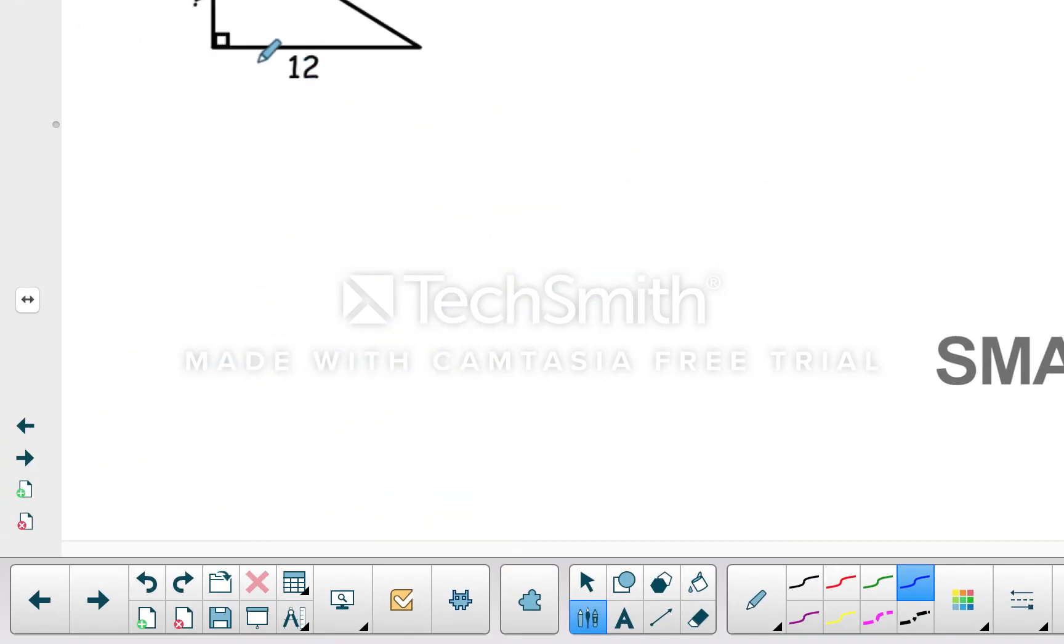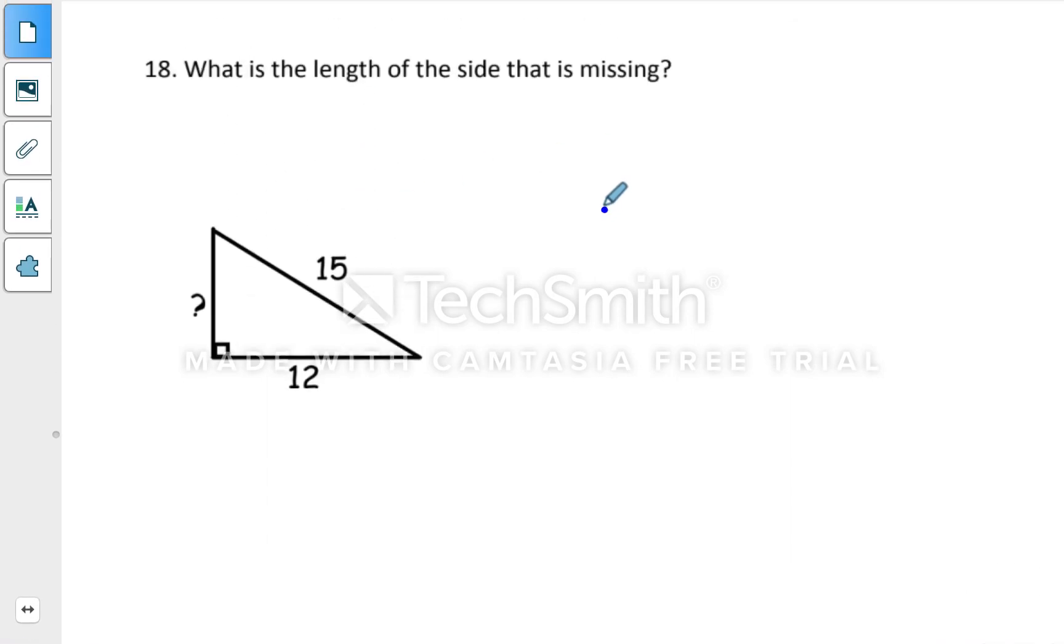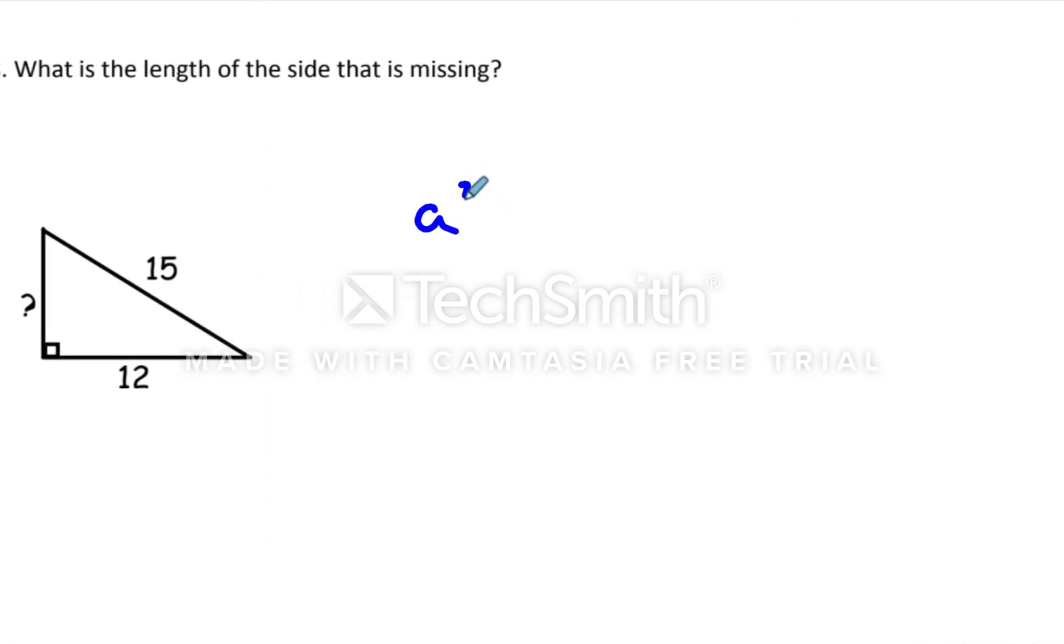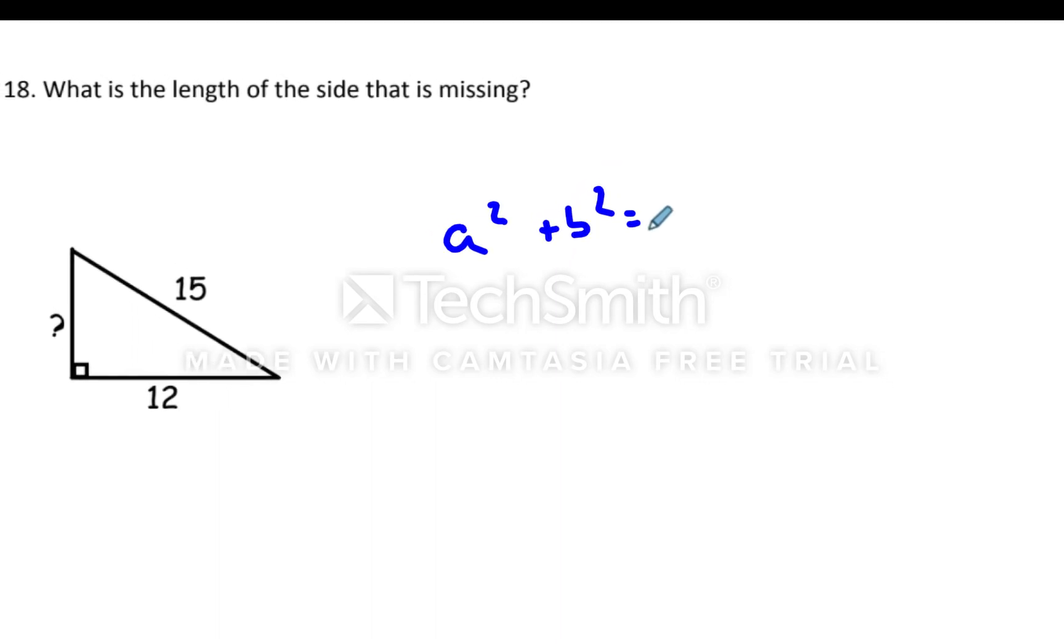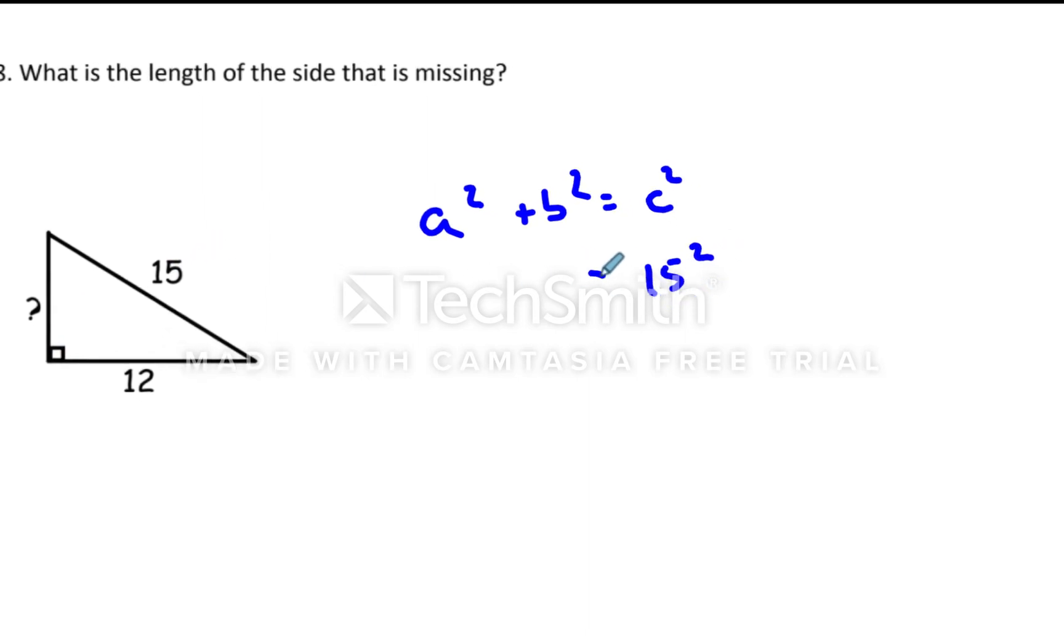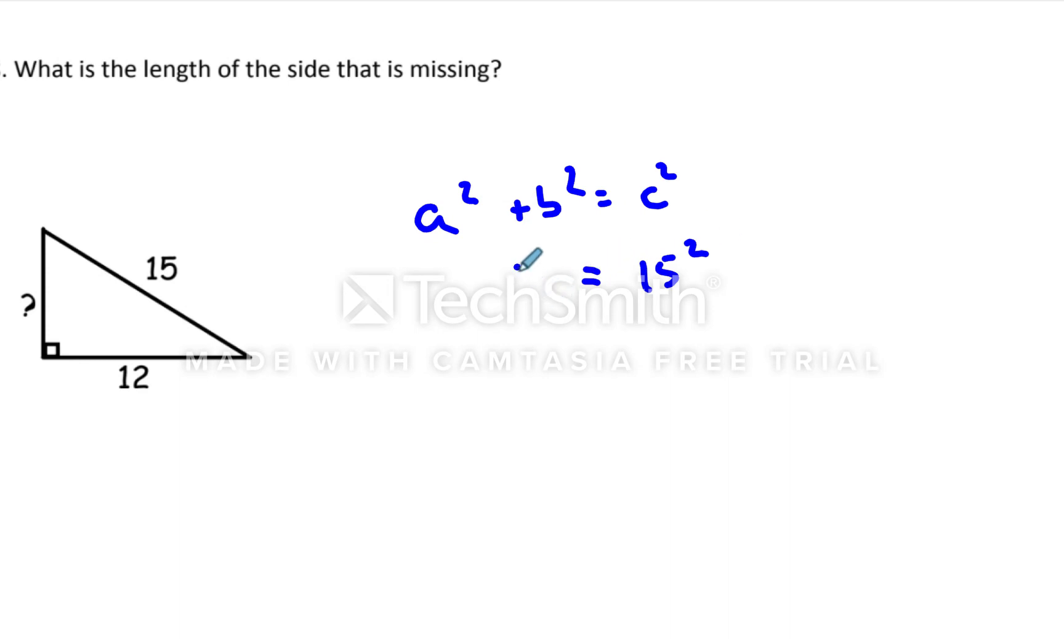What's the length of the missing side here? This is Pythagorean Theorem. If you remember to find the missing side, you do a squared plus b squared equals c squared. This is actually the hypotenuse. It's the biggest side. It's always opposite the right angle. So we'd write 15 right here. It doesn't matter what we call a and what we call b. I'll call b 12, but you could call a 12 if you want.